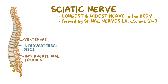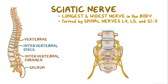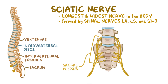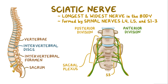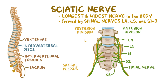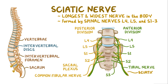These nerves travel to the area in front of the sacrum and join to make the sacral plexus. All the nerves in the plexus except S3 are split into two divisions: anterior and posterior. Anterior divisions of L4, L5, S1, S2, and the entire S3 nerve create the tibial nerve, while posterior divisions of L4, L5, S1, and S2 form the common fibular nerve. These two nerves are bound together by connective tissue and make up the sciatic nerve.